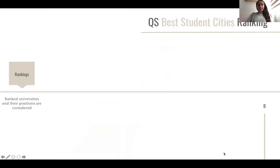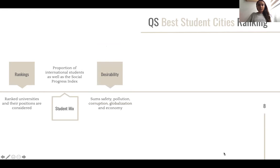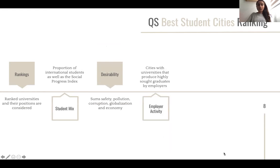The methodology that QS follows to construct this ranking is based on measuring six indicators. The first is rankings — the ranked universities in the city and their positions. The second is student mix — the proportion of international students and the social progress index. The third is desirability, covering safety, pollution, corruption, globalization, and economy. The fourth is employer activity — cities with universities that produce highly sought graduates by employers.